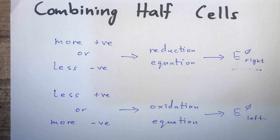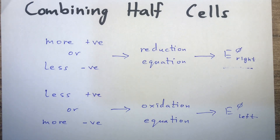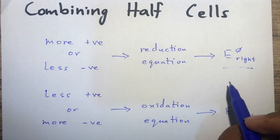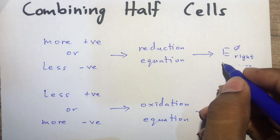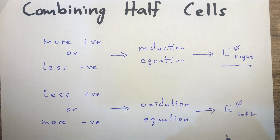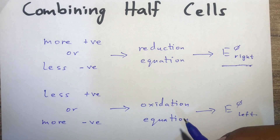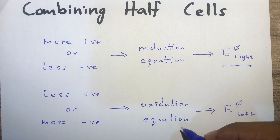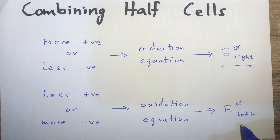When combining two half cells, the cell that has a more positive (or less negative) SCP value - that is, a higher SCP value than the other - is the half cell where reduction is happening. We'll always keep that on the right and call it E°right. The other half cell, with a less positive or more negative SCP value where oxidation occurs, we keep on the left and call it E°left.